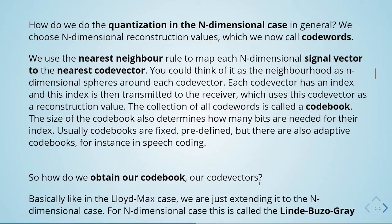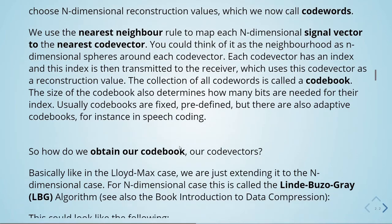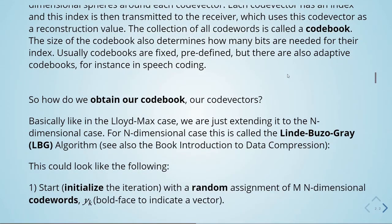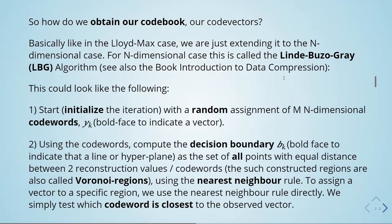Usually codebooks are fixed and predefined, but there are also some cases with adaptive codebooks — for instance, in speech coding. How do we obtain our codebook or code vectors? Basically, like in the Lloyd-Max case, we're just extending it to the n-dimensional case. For the n-dimensional case, this is called the Linde-Buzo-Gray algorithm.